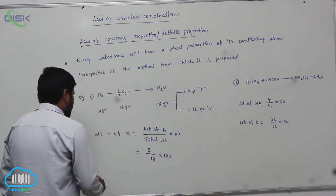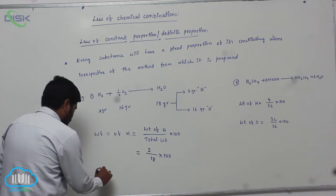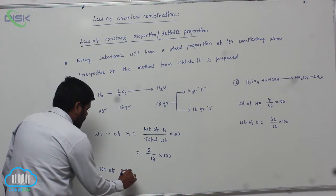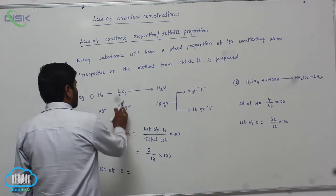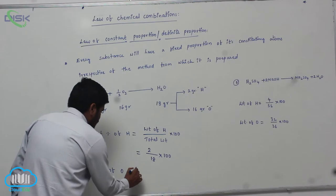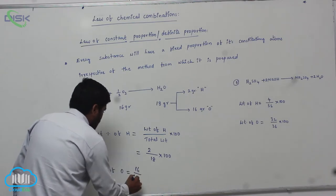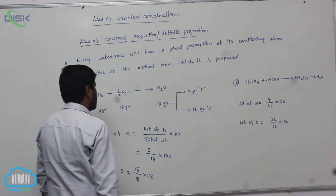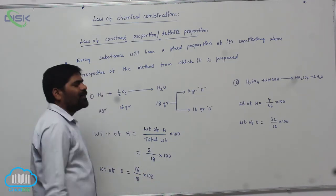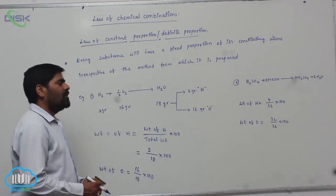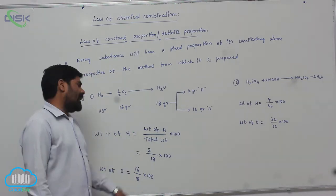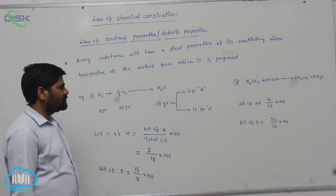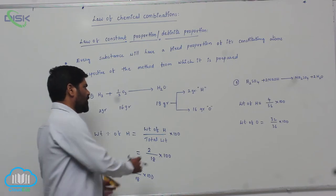In the same way, weight of oxygen equals to oxygen present in 16 grams, so 16 by 18 into 100. This is the weight percentage method. Weight percentage method means weight of an atom by total weight into 100. This is one process a water molecule is formed.